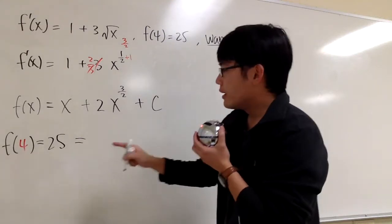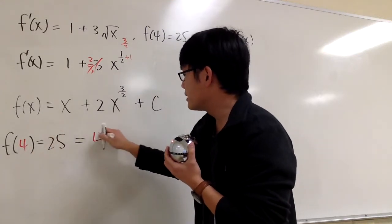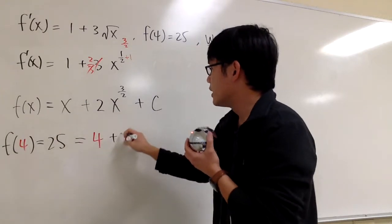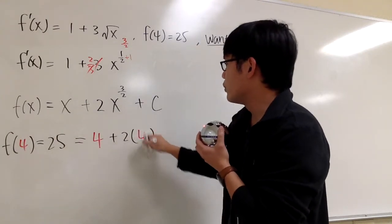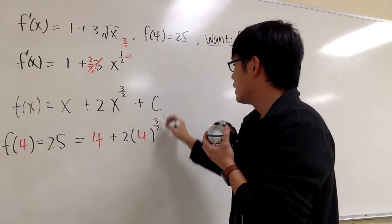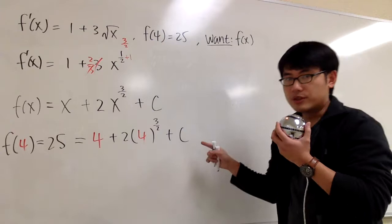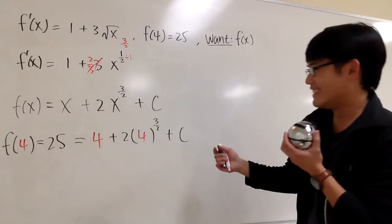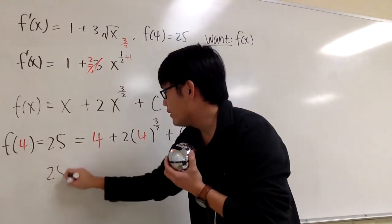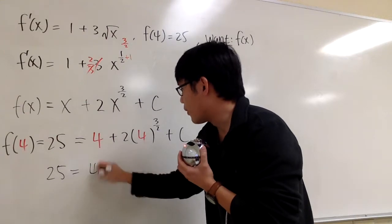Because we know f(4) is equal to 25, I'm going to plug in 4 into all these x. So I'm looking at this as 4 plus 2 times 4 to the 3/2 power and then plus C. And if you solve for C, then you are done.